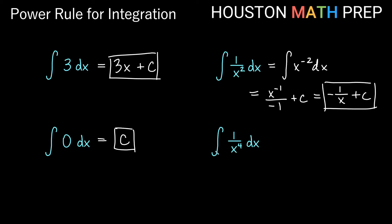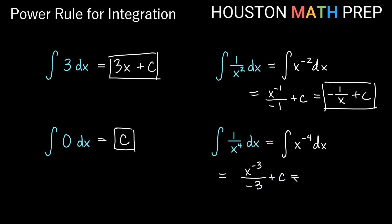The integral of one over x to the fourth dx. We see this as x to the negative four dx. The power goes up by one, giving x to the negative three. We divide by the new power of negative three plus our constant of integration. The negative three in the bottom is like negative one-third, and x to the negative three is x cubed in the denominator, so the answer is negative one over three x cubed plus c.